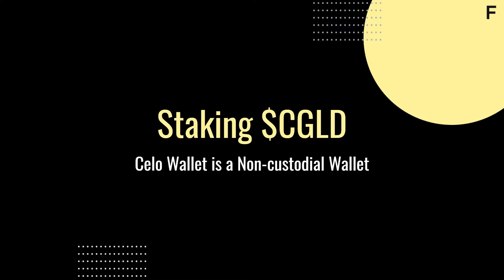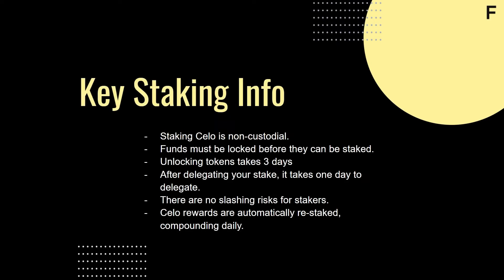Let's take a look at some key staking facts. Staking Cello is non-custodial, meaning you stay in control of your keys the whole time. Funds must be locked before they can be staked. Unlocking tokens or unbonding takes three days. After delegating your stake, you'll need to activate your stake and vote one day later for the stake to start accruing rewards. There are no slashing risks for stakers — only validators are exposed to this risk — and Cello rewards are automatically re-staked, compounding daily.